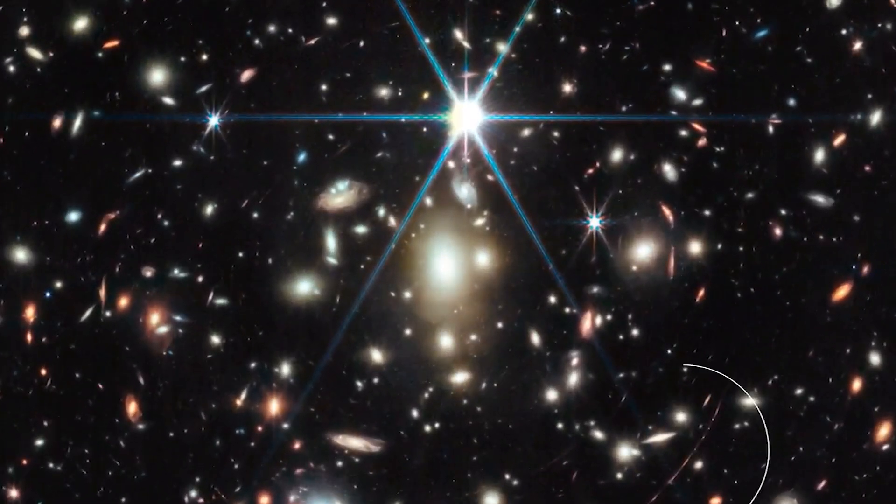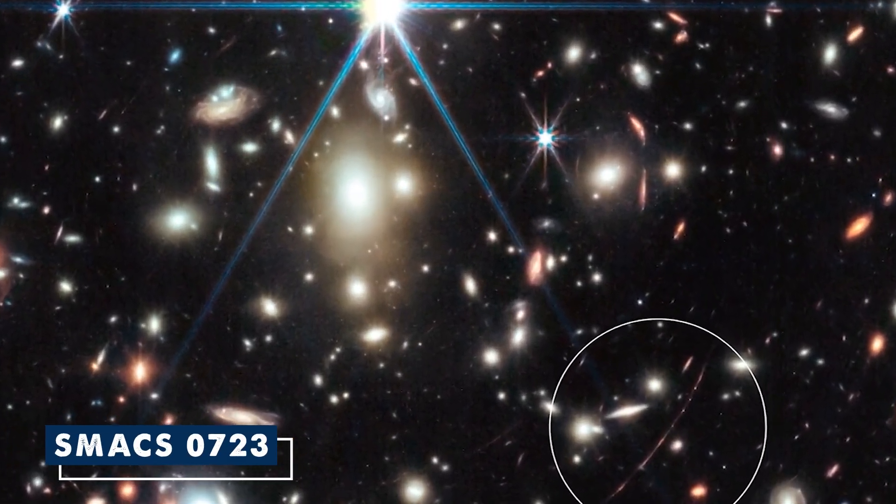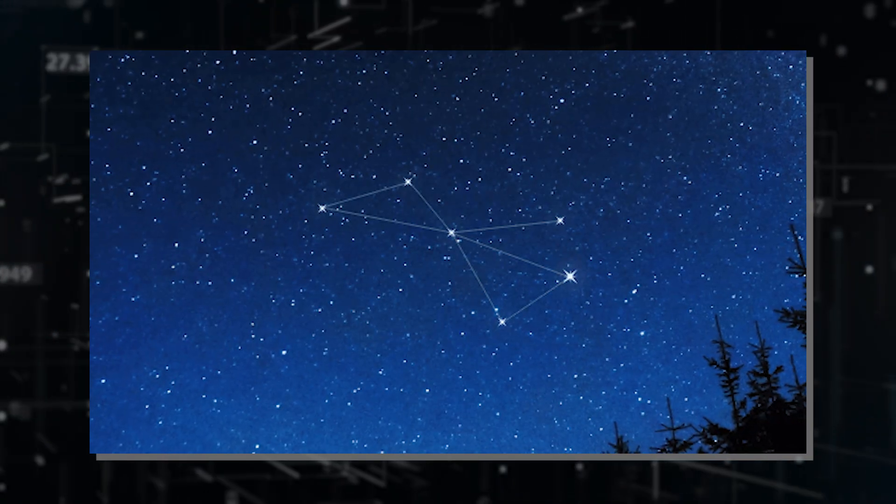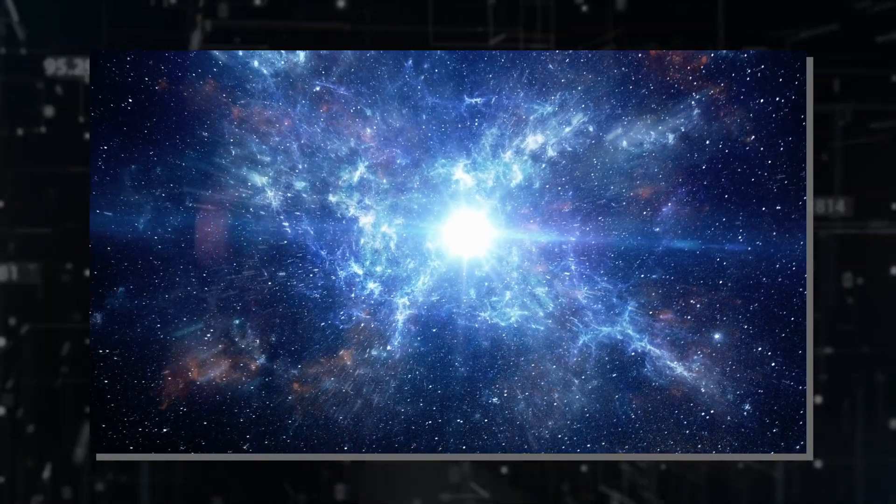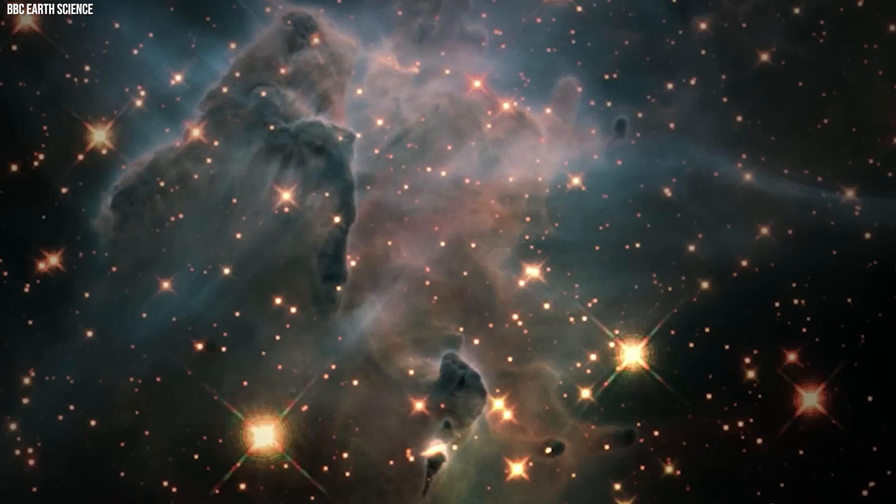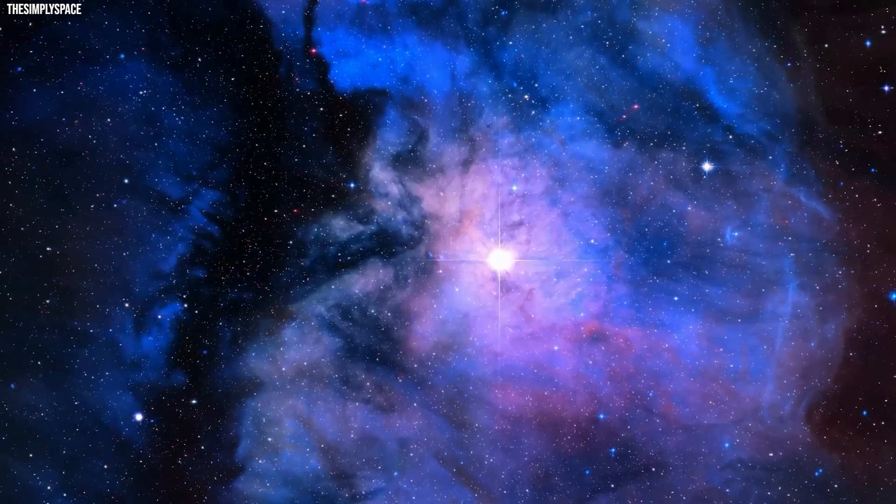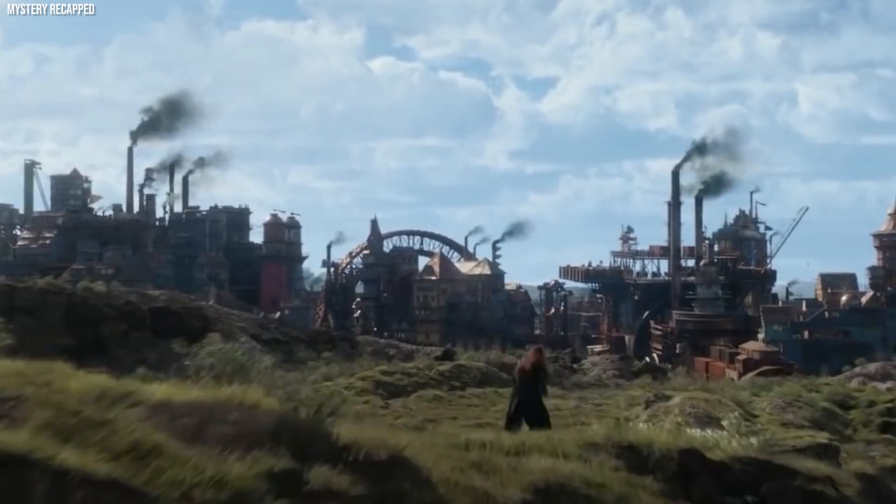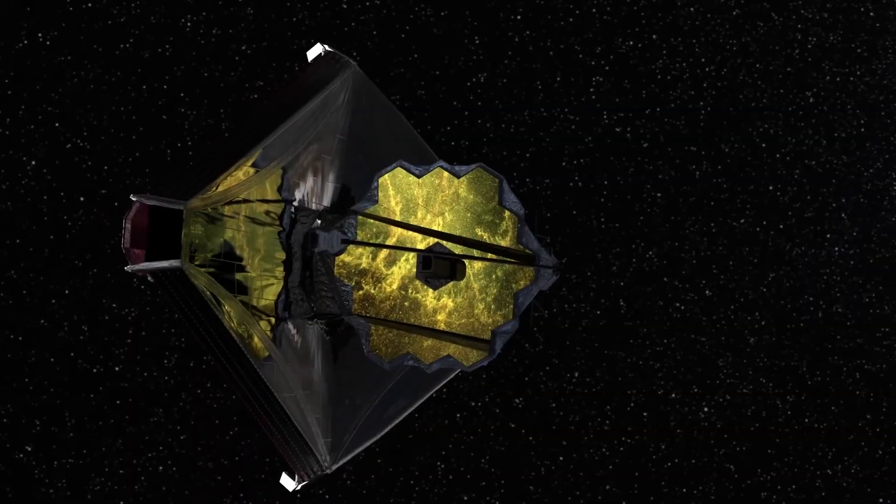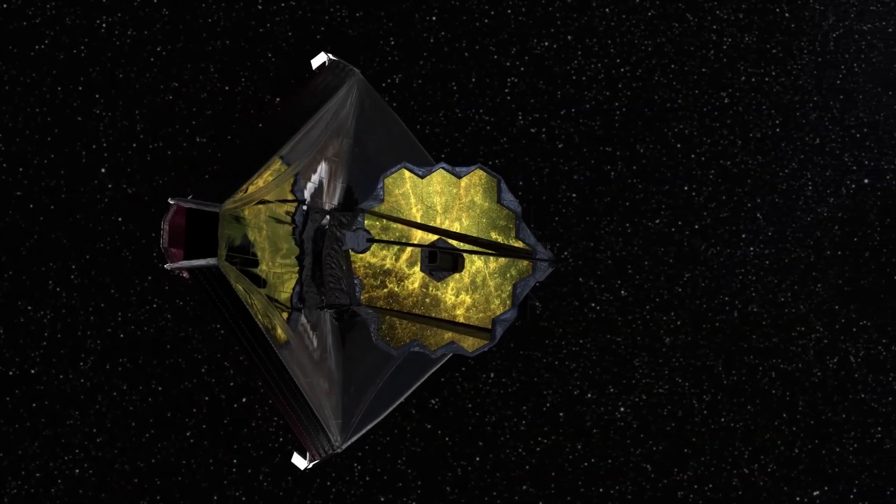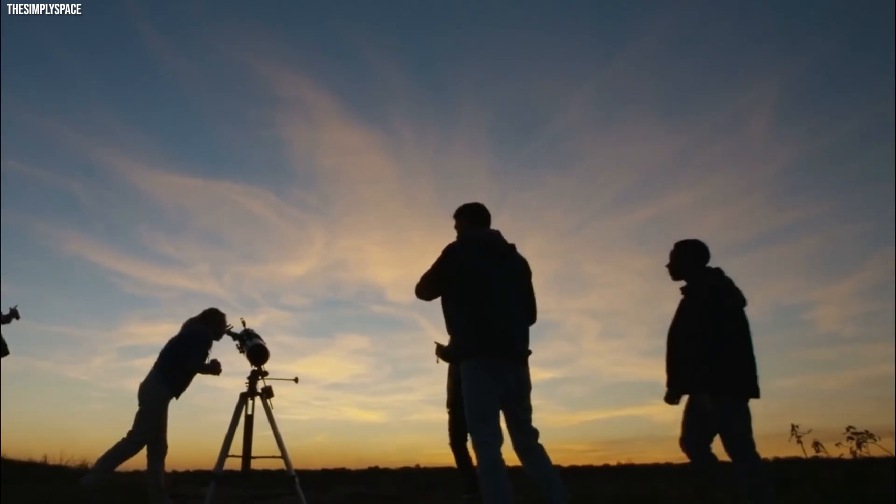This galaxy cluster, SMAX 0723, is near a place called Volans in the southern sky. It's a big deal in helping us learn more about our universe. As Webb keeps exploring, we're in for more cool discoveries, with each new picture and fact showing us more about the vast and fascinating place we call home. What do you think of JWST's abilities? Let us know your thoughts in the comments below.